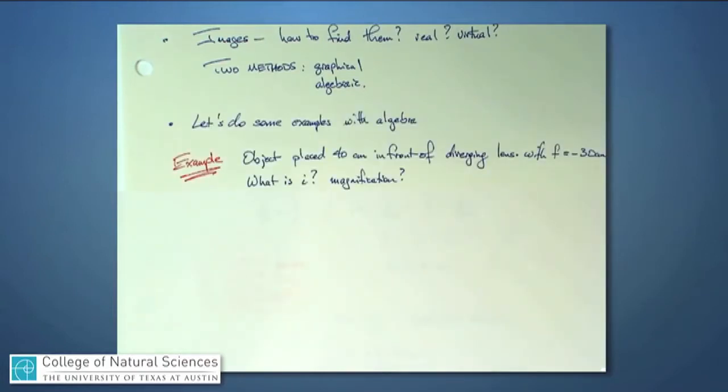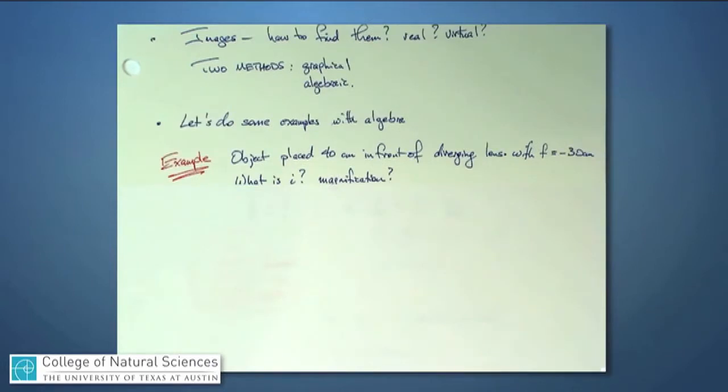So, this might be a typical problem you would see. If an object is placed 40 centimeters in front of a diverging lens, one with a focal length of negative 30 centimeters, I could ask you what is the image distance, i, and what is the magnification, m?